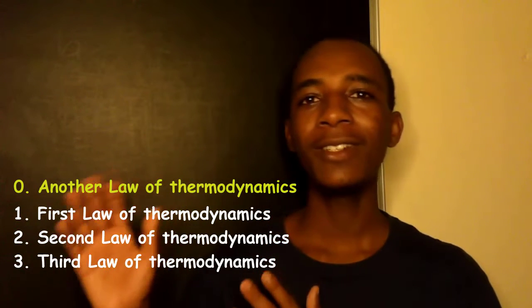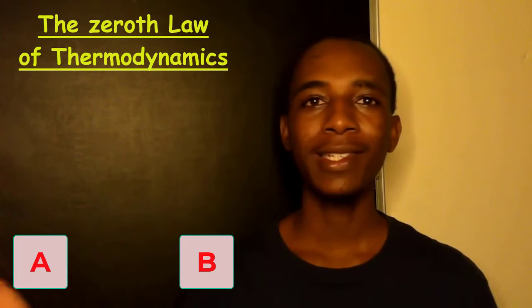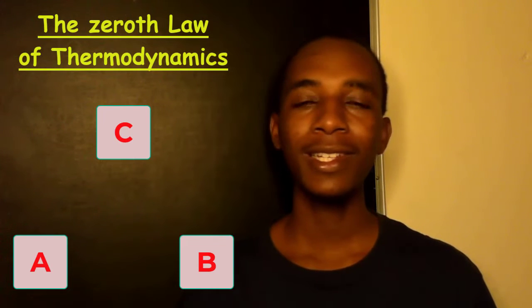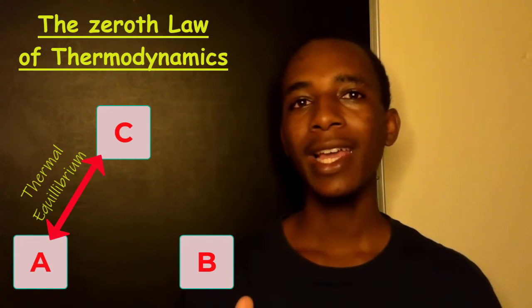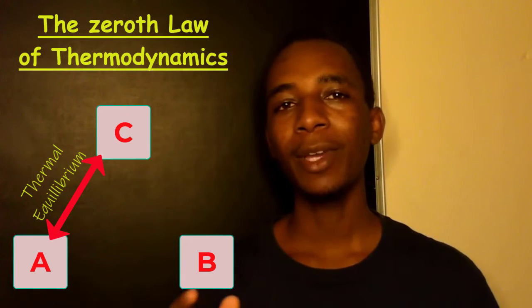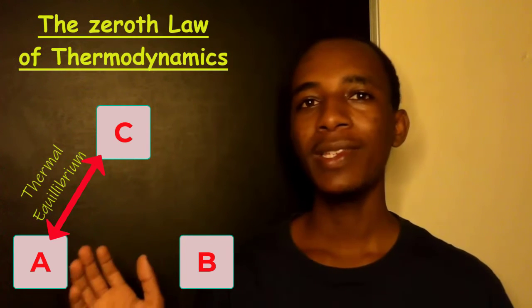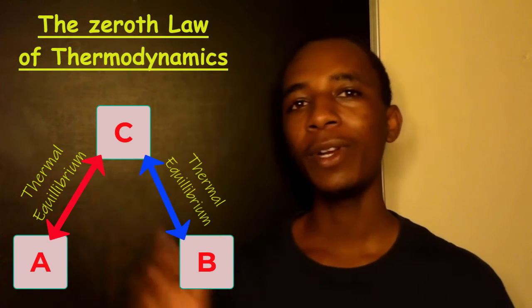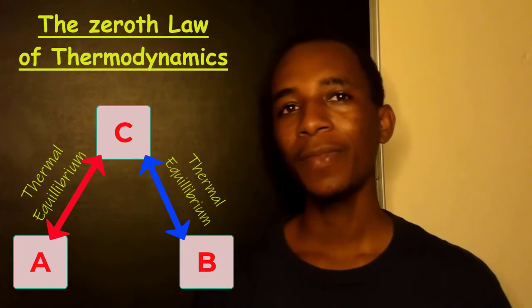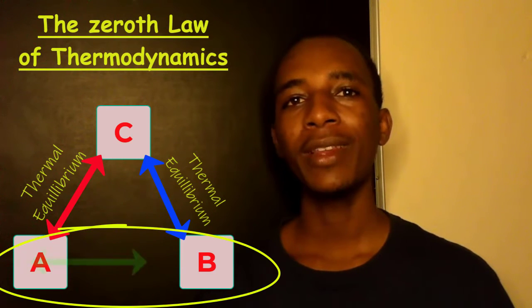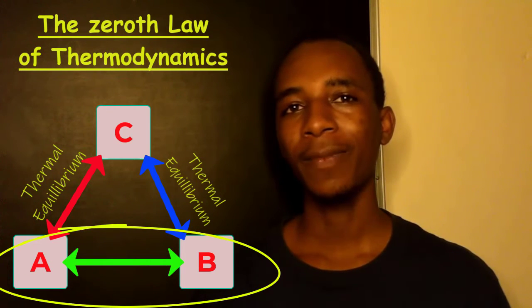Now let's dig into the law of thermodynamics itself and see what it states. To put it simply, the zeroth law says if you have three bodies A, B and C, such that A is independently in thermoequilibrium with C, and also B is independently in thermoequilibrium with C, then A and B will also be in thermoequilibrium with each other.